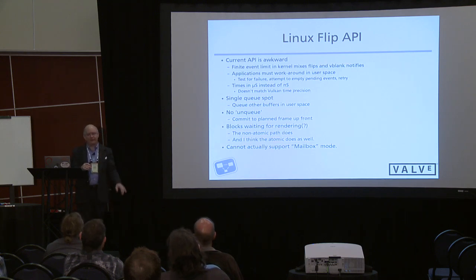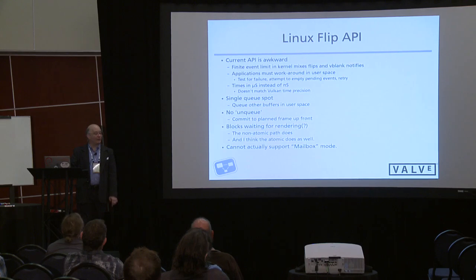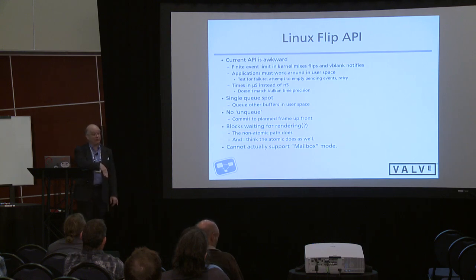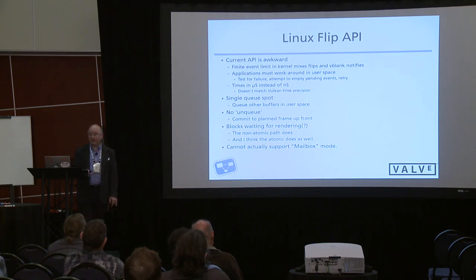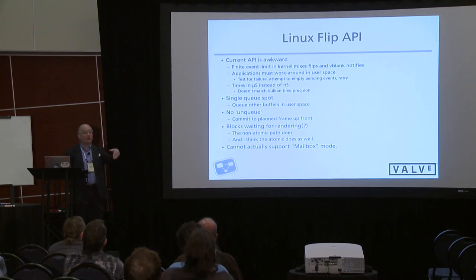Every application that uses the API has this grotty little kludge: 'oh I got EBUSY back, let me go read some events and retry,' which is ugly. The times provided from the kernel are only in microsecond granularity, but the kernel has a nanosecond clock, Vulkan likes nanoseconds, and everybody likes nanoseconds these days. There's no reason not to provide nanoseconds back to user space. I've already fixed one kernel API to provide nanoseconds, and I think we should fix the flip API as well.